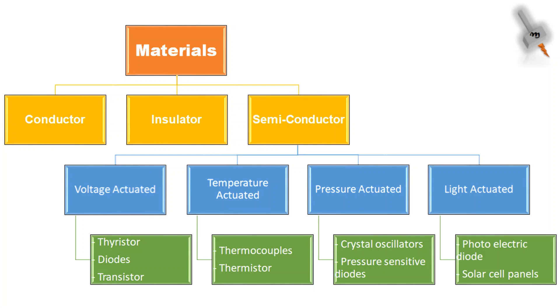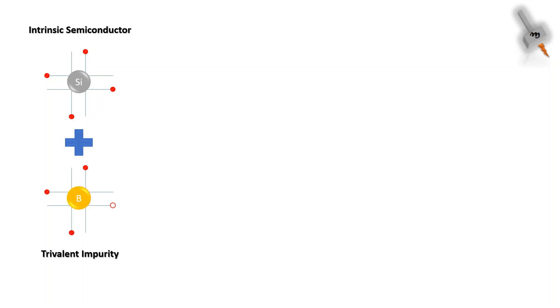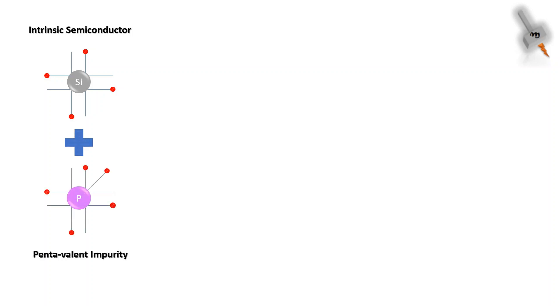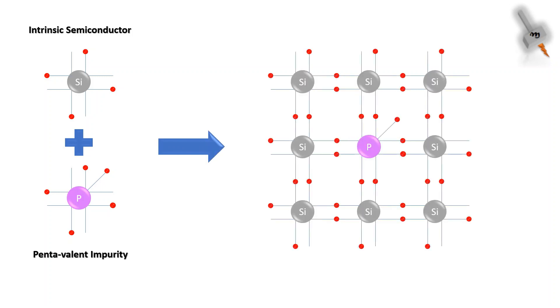Now let's move to the formation of a p-n junction. For that we need to know p-type and n-type material. A p-type material is formed when an intrinsic semiconductor like silicon is doped with a trivalent impurity like boron, forming a material with a shortage of electrons, otherwise known as a hole. This type of material has a net positive charge, hence the p-type material. An n-type material is formed when an intrinsic semiconductor is doped with a pentavalent impurity like phosphorus, with an extra electron.